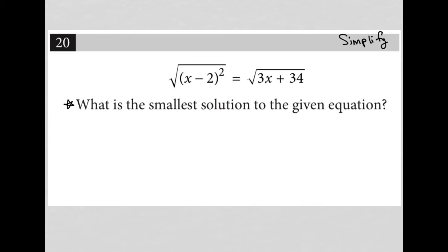So the fact that this is x minus 2 squared means that this simplifies to just x minus 2. And then we still would have our 3x plus 34 under the radical, which means I'd have to square both sides anyway.